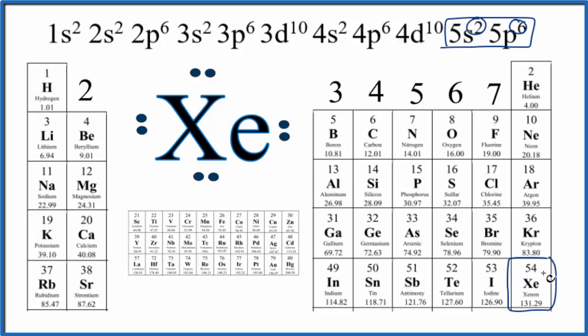Because xenon has 8 valence electrons it's considered a noble gas and in general it doesn't react with other elements. This is Dr. B with the Lewis structure for Xe, xenon.